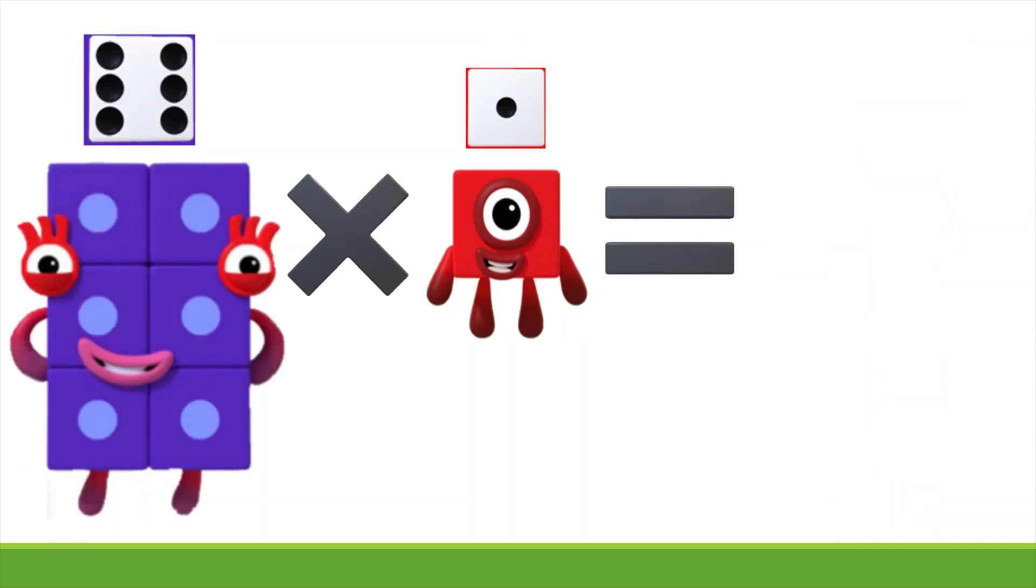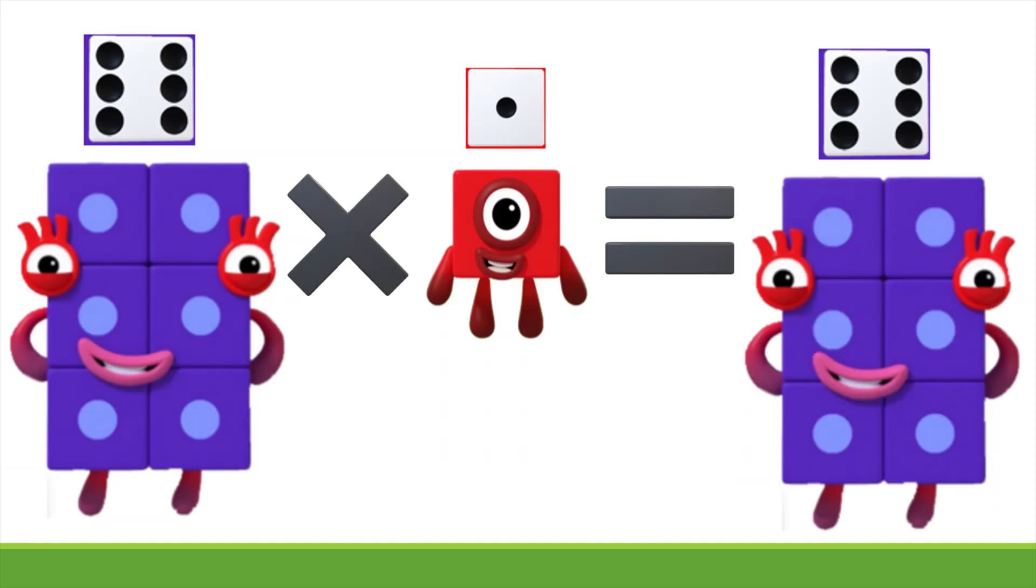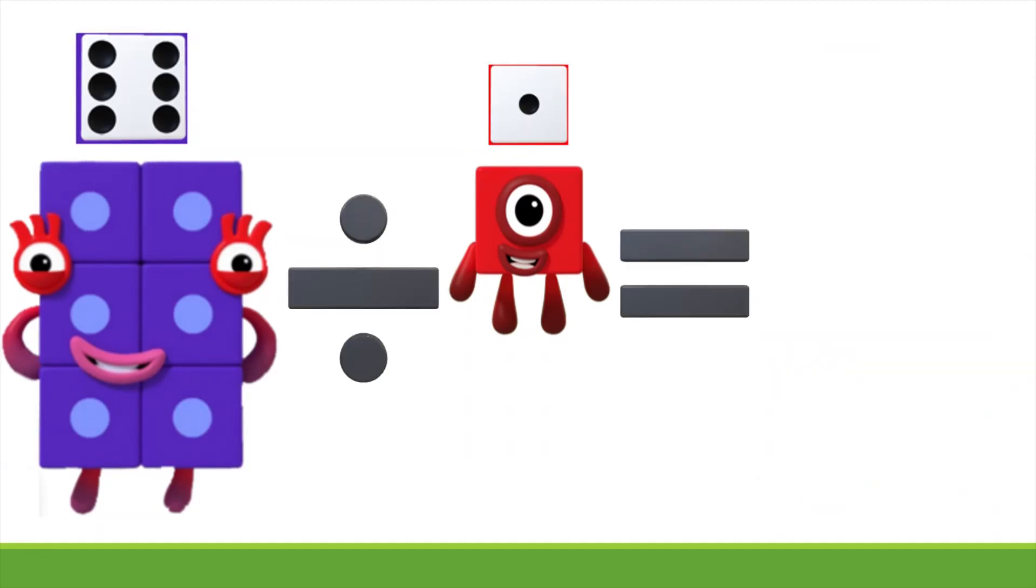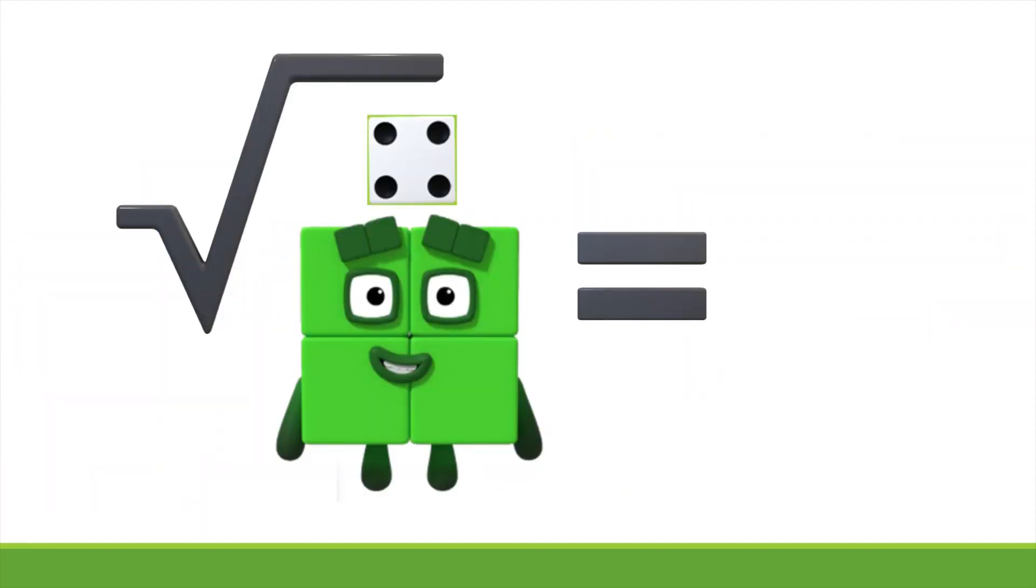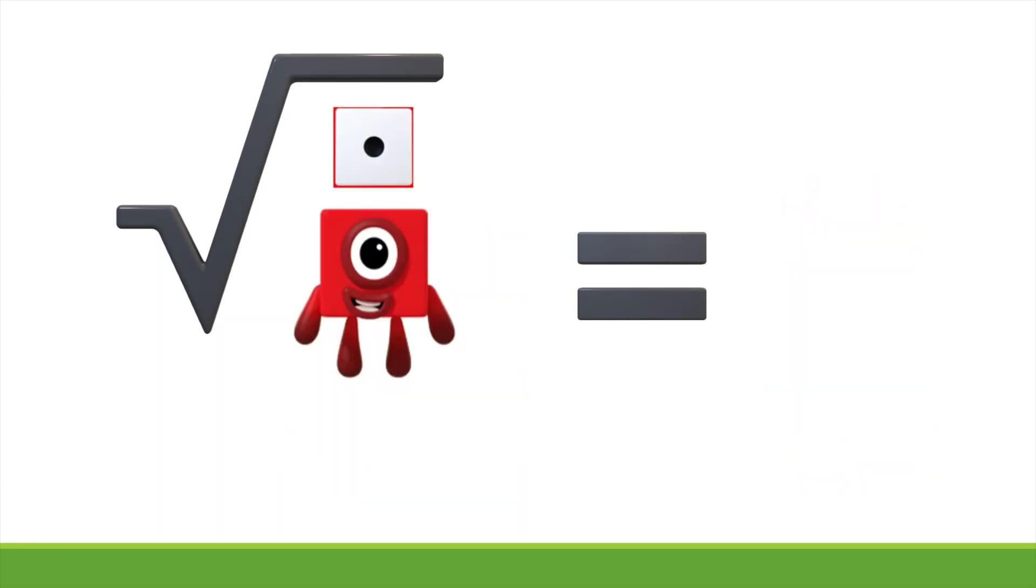6 times 1 equals 6. 6 divided by 1 equals 6. 6 divided by 6 equals 1. Radical 4 equals 2. Radical 1 equals 1.